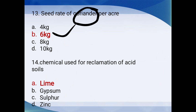Chemical used for the reclamation of acid soils: lime, gypsum, sulfur, or zinc? The answer is lime (sunnam). For reclamation of acid soils, we use lime. Gypsum is used for reclamation of alkaline/saline soils.